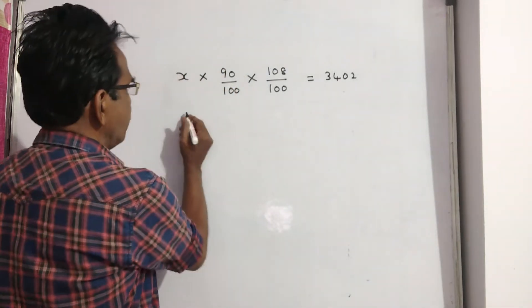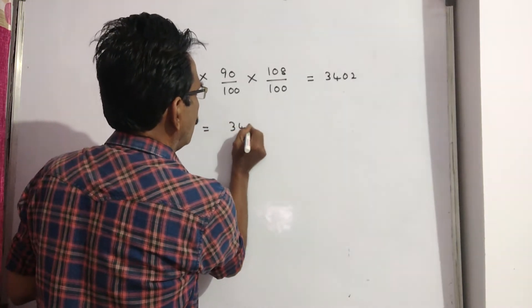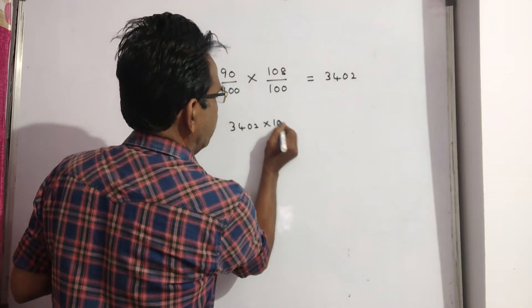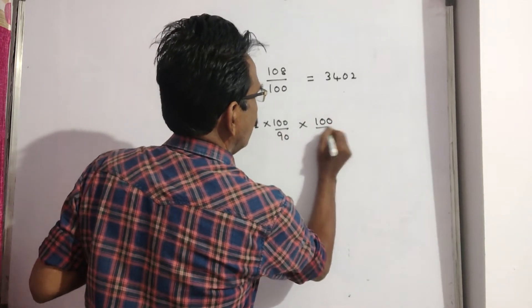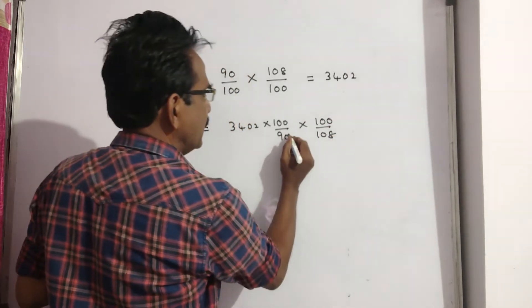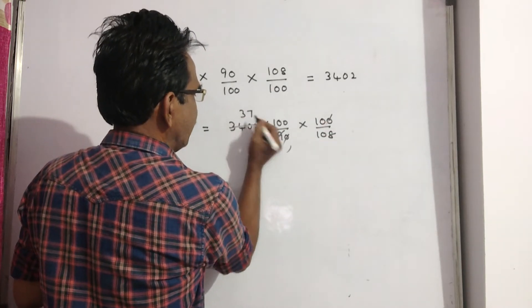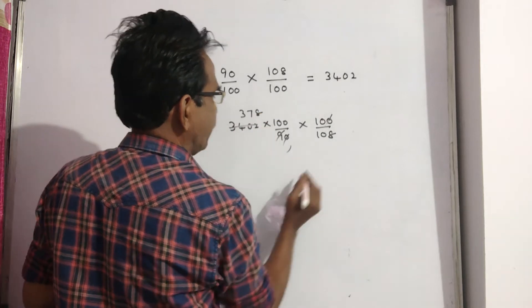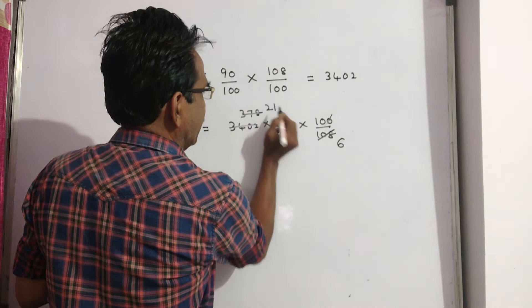Now let us find x. x is equal to 3402 into 100 by 90 into 100 by 108. Zero gets cancelled, 9 1s 9, 3s 27, 9 7s 63, 9 8s 72, 18 6s 18, 21s... 2 32s 37, 7000 by 2.